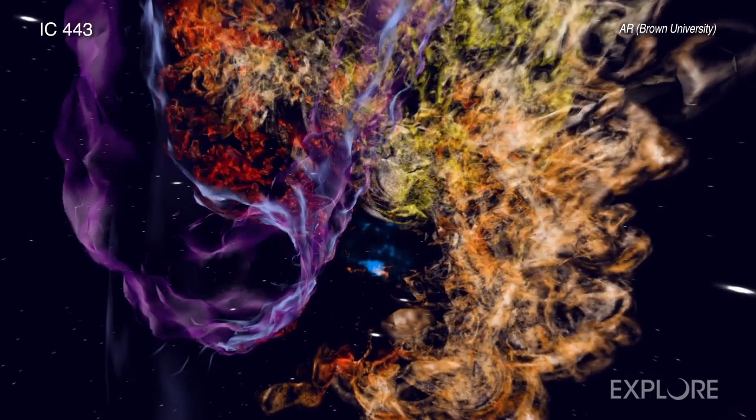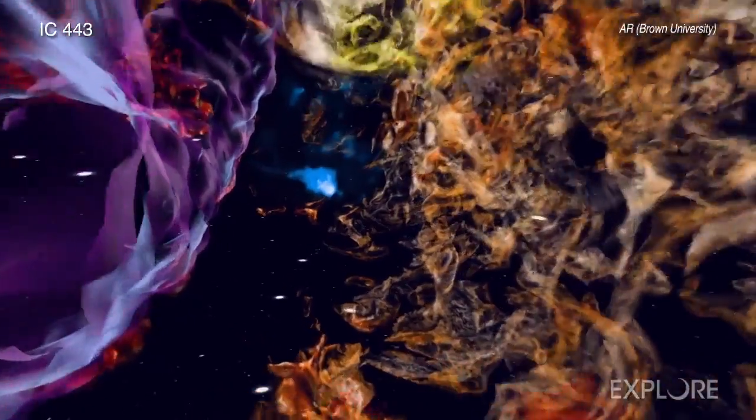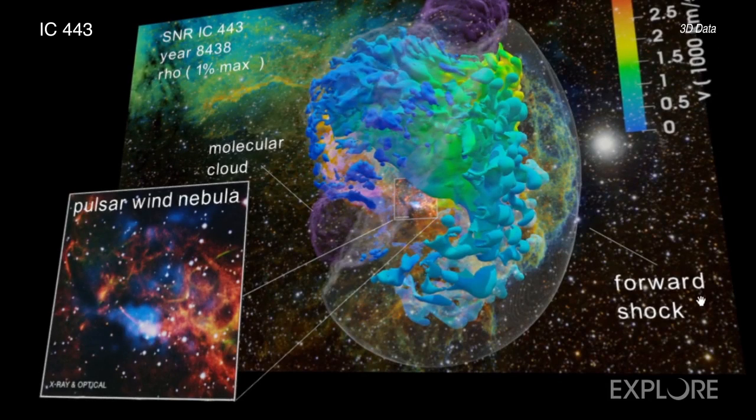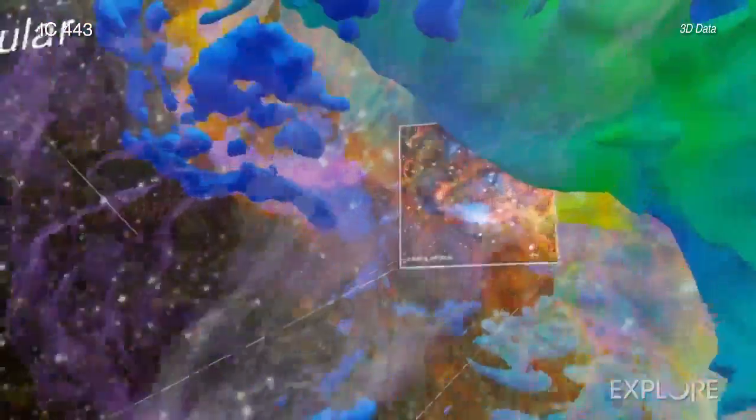There are several versions of this 3D model of IC443. In one developed by scientists, we can see that the shock wave and the remains of the star have collided with the gas cloud and are now passing through it.